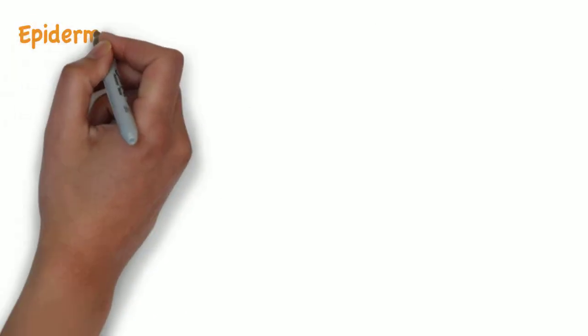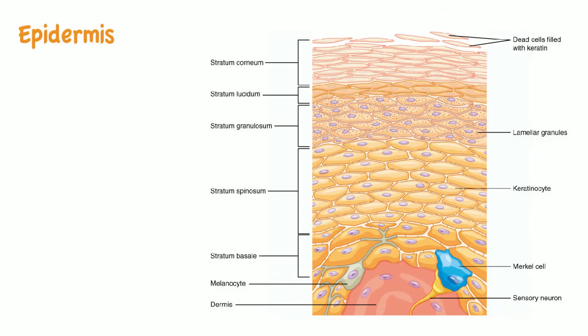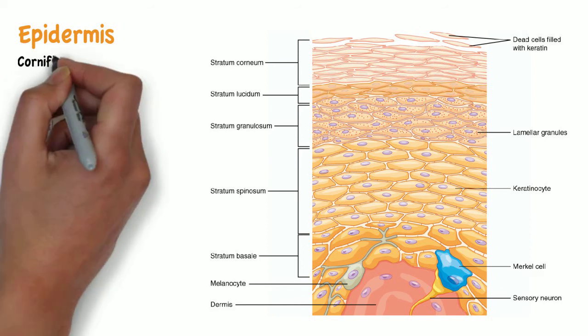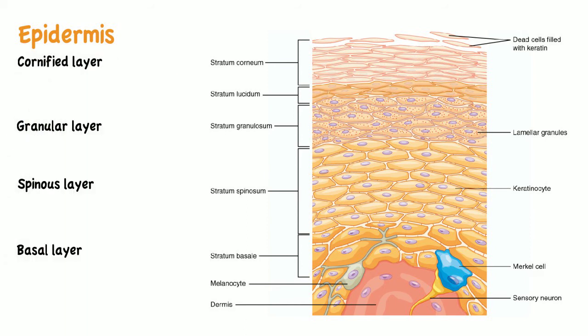The epidermis is generally divided into four layers: the basal layer, the spinous layer, the granular layer, and the cornified layer. However, in thick skin it may contain five layers, with the extra layer — the stratum lucidum — sitting between the granular and cornified layers.